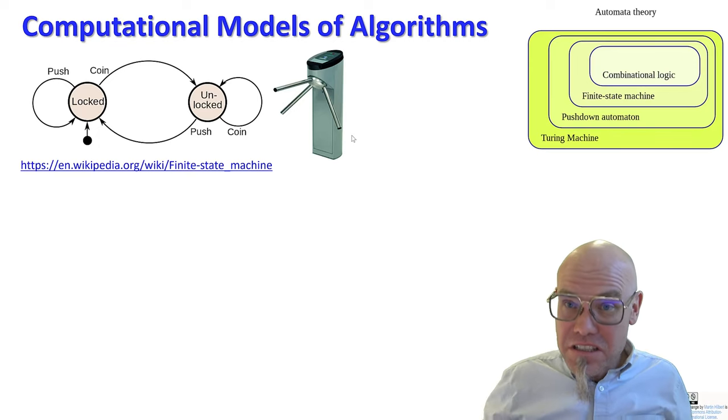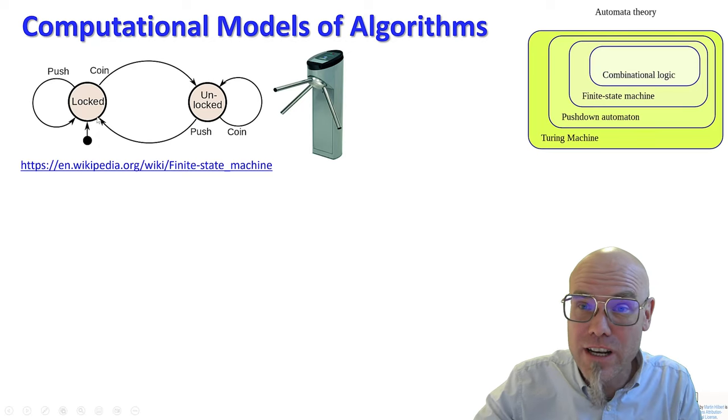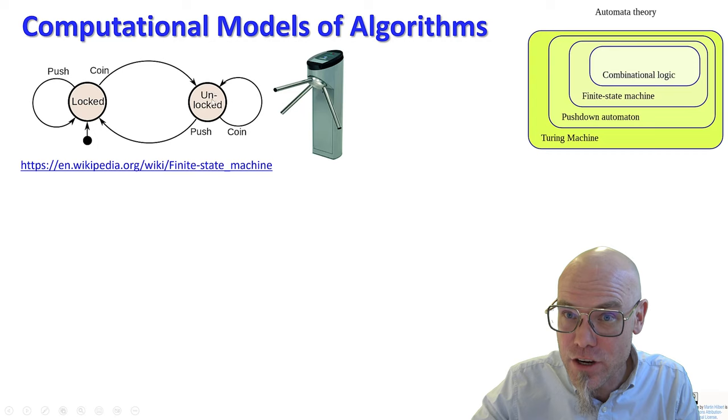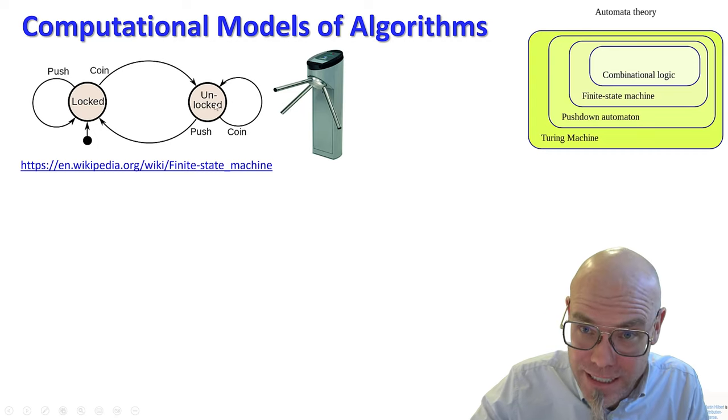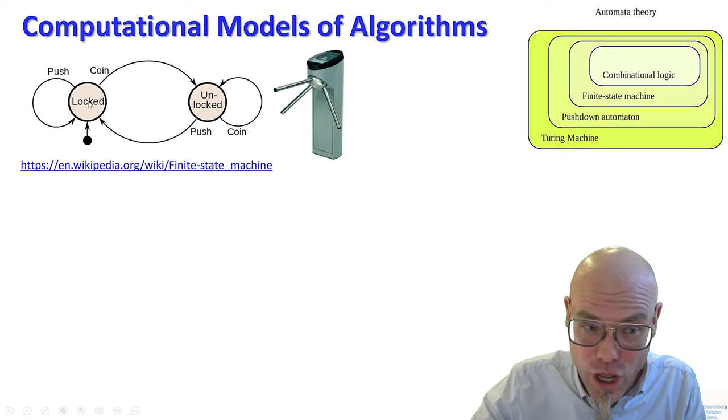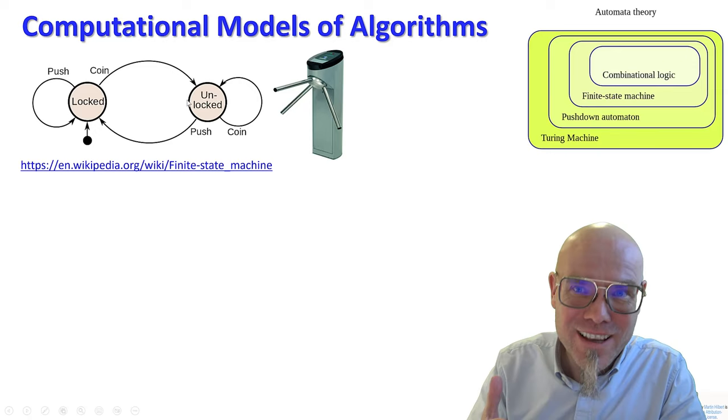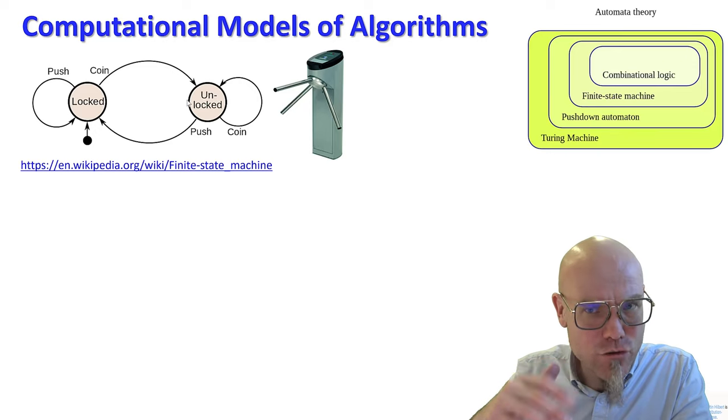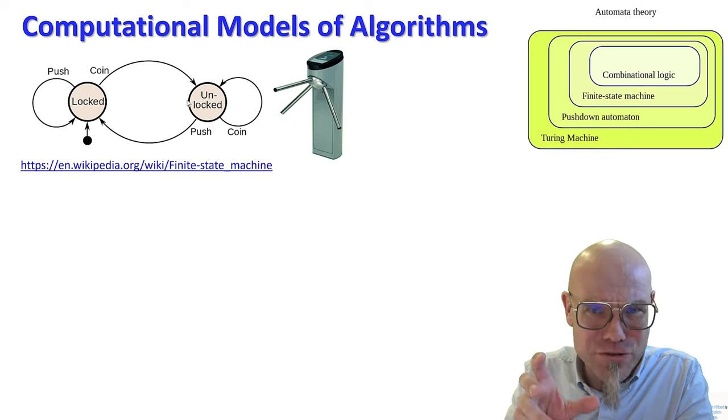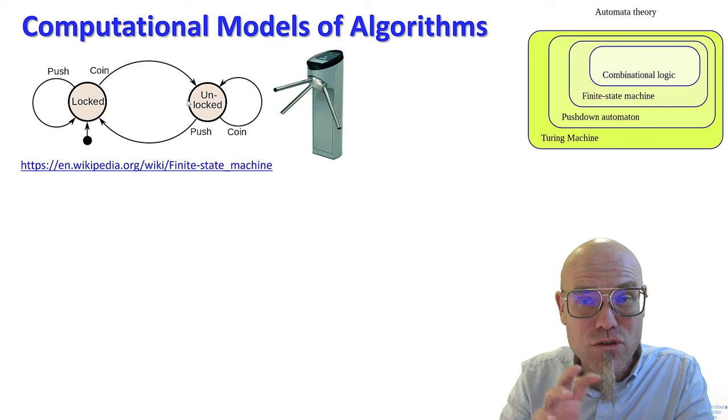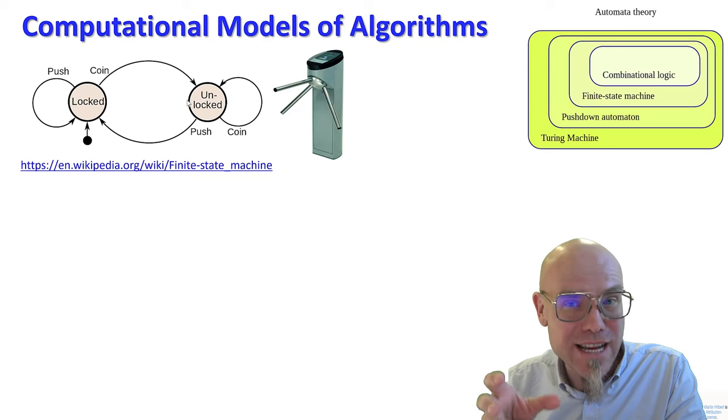For example, here I have a machine, these are machines you find in the metro station, and the machine is locked. If you put in a coin, it gets unlocked. If you put in another coin, it stays unlocked. But if you push, it becomes locked again. If you push it still, it still stays locked. However, if you put in a coin, this state machine, this flow chart, basically describes a process. We use these figurative arrows to describe what algorithms do. They do their recipes, and once we're in one state, we can go to another state, and then something else happens.